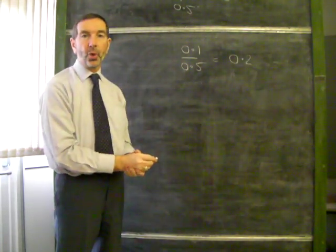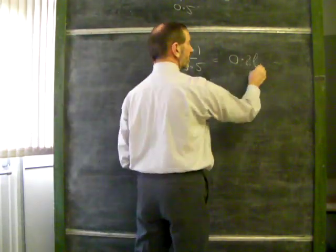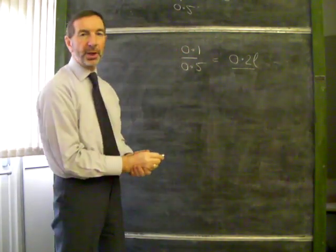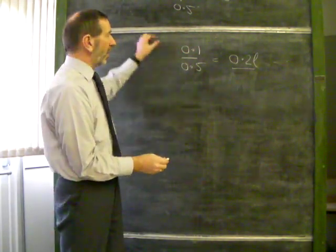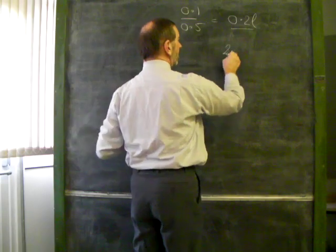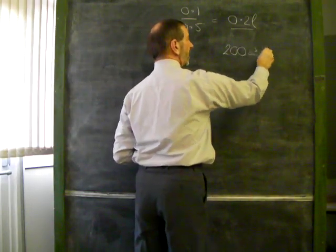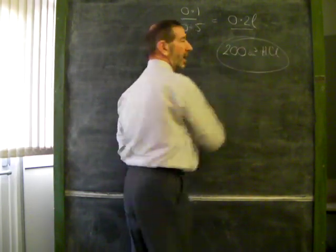0.2 what? Volume in liters. There's the answer: 0.2 liters of hydrochloric acid is required. Or if we prefer, 200 cubic centimeters of hydrochloric acid.